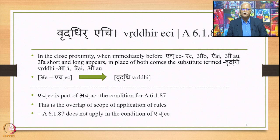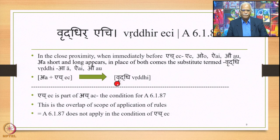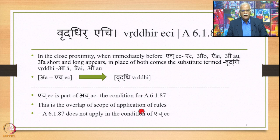To put it in the form of an equation: if we have A plus a vowel (H) in close proximity in Samhita mode as input, 6.1.88 applies and in place of both A and H we have Vriddhi as one substitute. H here is part of A — the condition for 6.1.87 — and this is the overlap of scope. Since the scope of 6.1.88 is part of 6.1.87, in this smaller scope 6.1.87 does not apply and 6.1.88 applies.